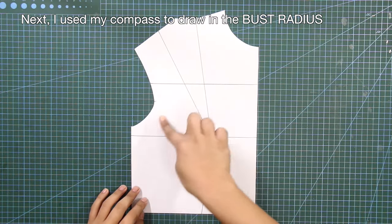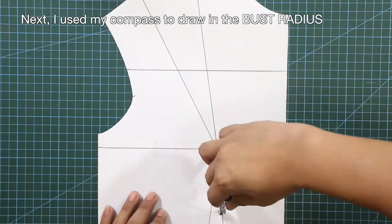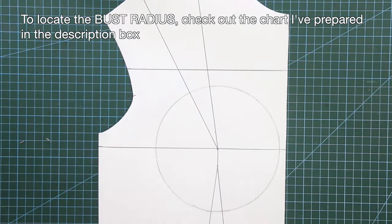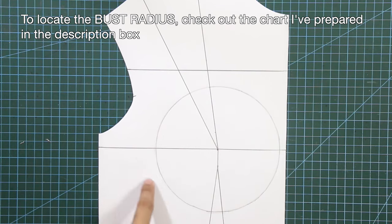Next, I used my compass to draw in the bust radius. To locate the bust radius, check out the chart I've prepared in the description box.